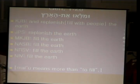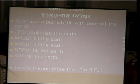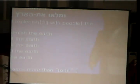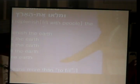Genesis chapter 1:28 contains the Hebrew word U-Vilu, which is an imperative meaning to fill. The King James Bible says 'replenish,' meaning 'fill with people, the earth.' The JPS also says 'replenish,' but other translations simply say 'fill the earth,' which reduces the meaning. The Hebrew word 'malu' means more than just 'to fill' — 'replenish' means 'fill with people.'